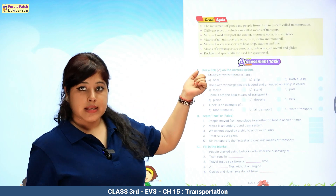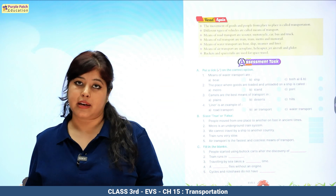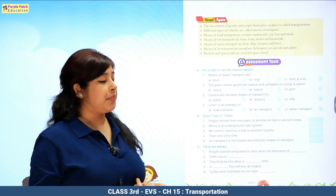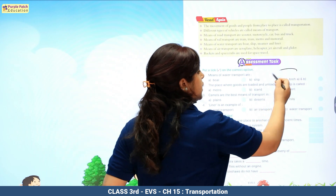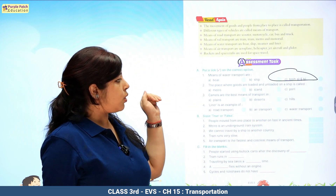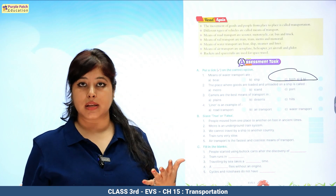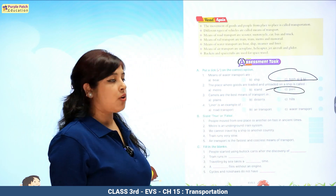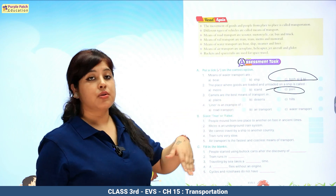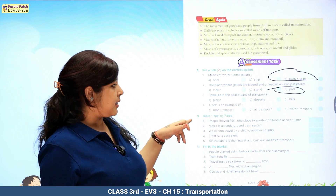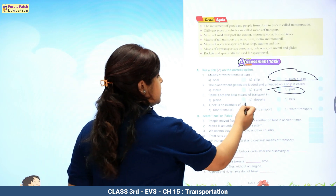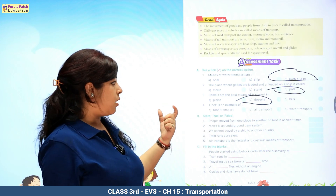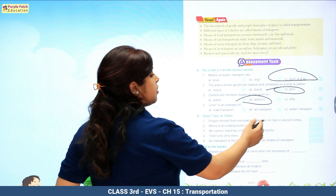Now time for assessment. First, put a tick on the correct option. Means of water transport — boat? Yes. Ship? Yes. So c is the right option — both a and b. The place where goods are loaded and unloaded on a ship — ship kahan rukti hai saman uthane aur unload karne ke liye? Port. So c is the correct option. Camels are the best means of transport in deserts — not plains or hills. Liner is an example of water transport.